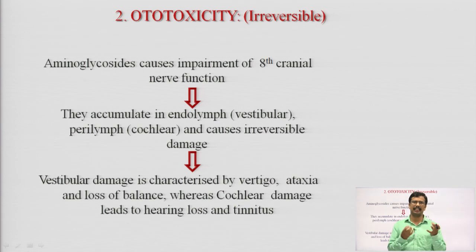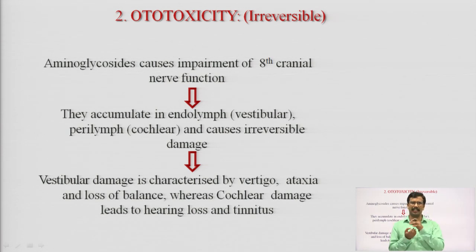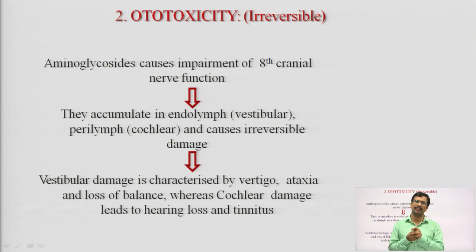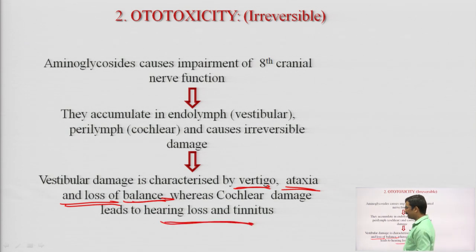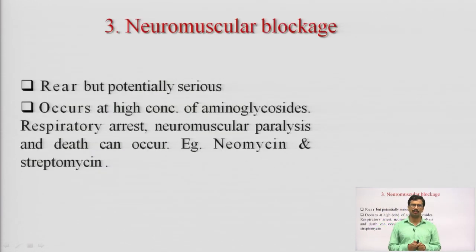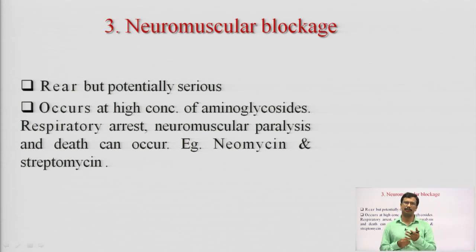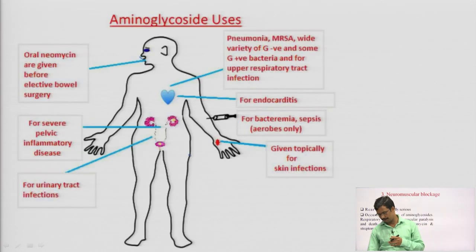Regarding ototoxicity: aminoglycosides damage the eighth cranial nerve. Their concentration accumulates in the endolymph and perilymph, causing irreversible damage to the vestibular elements, characterized by vertigo, ataxia, loss of balance, hearing loss, and tinnitus. Neuromuscular blockade is also a side effect — aminoglycosides block nicotinic receptors at the neuromuscular junction, hampering muscle relaxation.